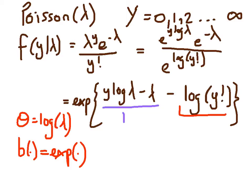This part here represents c of y and phi, but if we notice the divisor by 1, both phi and a of phi are equal to 1. So we can just make a note that a of phi equals 1.